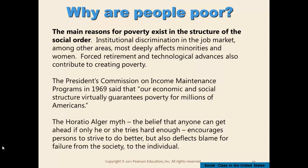The main reasons for poverty exist in the structure of the social order itself. Institutional discrimination in the job market deeply affects minorities and women more than any other group. Forced retirement and technological advances also contribute to poverty, particularly for the elderly. In 1969, the President's Commission on Income Maintenance Programs — appointed during the Nixon administration but originally under Lyndon Johnson — stated that our economic and social structure virtually guarantees poverty for millions of Americans. Johnson had declared the war on poverty in 1964 after becoming president following Kennedy's assassination.